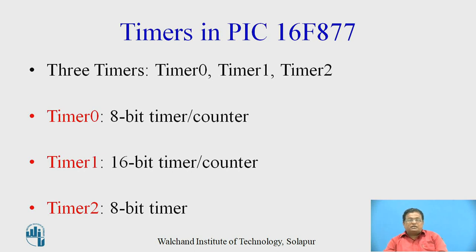In the PIC 16F877, there are three timers: Timer 0, Timer 1, and Timer 2. Timer 0 is 8-bit and can be used as a timer or as a counter. Timer 1 is 16-bit and can operate in timer mode.